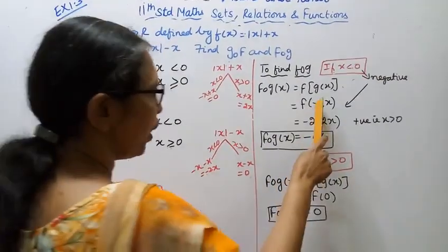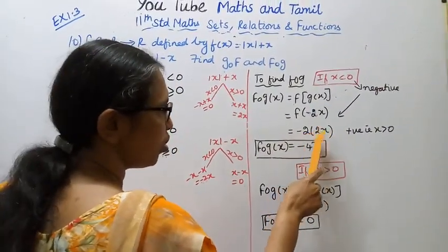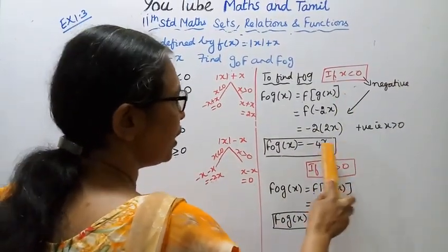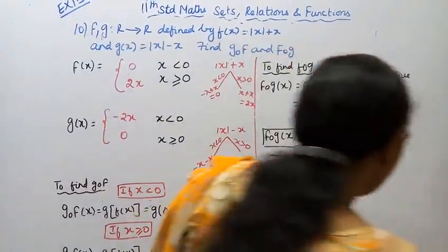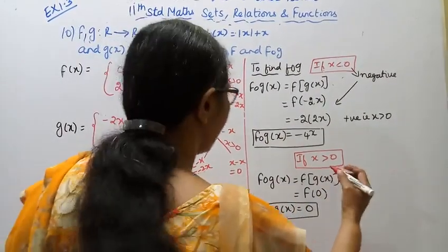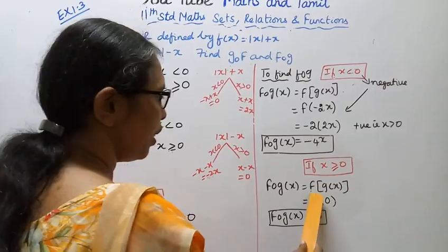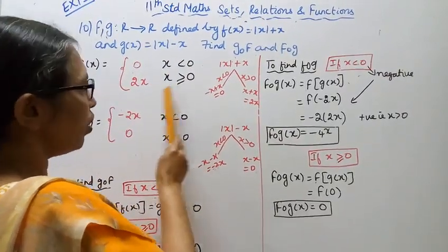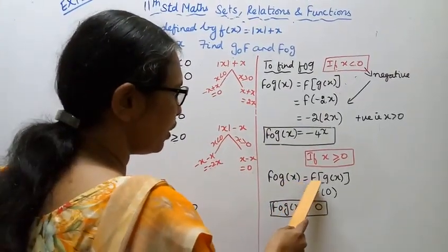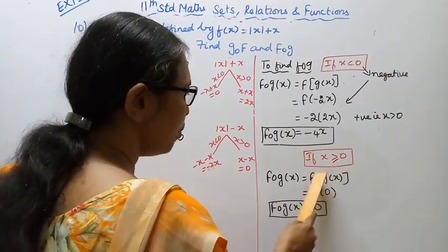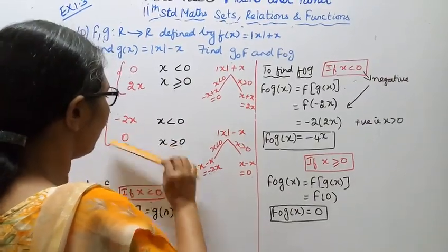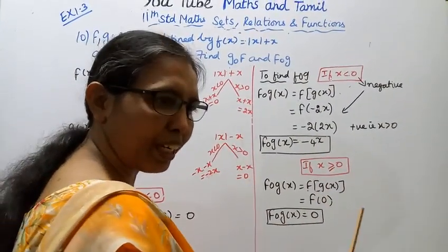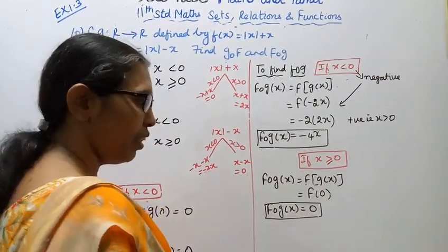Then minus 2 of 2x gives f(g(x)) = -4x. When x ≥ 0, g(x) = 0, so f(g(x)) = f(0) = 0. Therefore f(g(x)) = 0 when x ≥ 0, and -4x when x < 0.